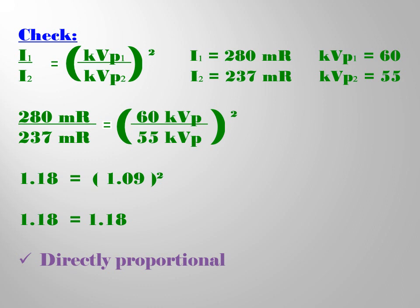So I have a solution here if our answer is correct. 280 mR over 237 mR equals 1.18. And then, 60 KVP divided by 55 KVP equals 1.09.